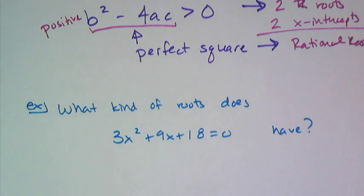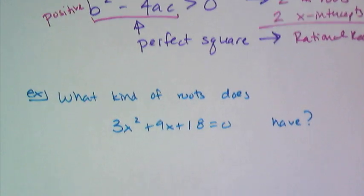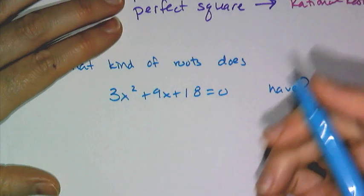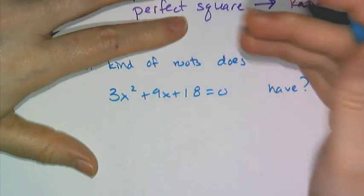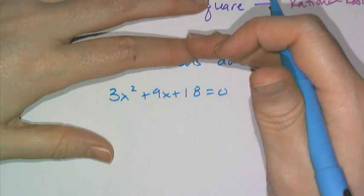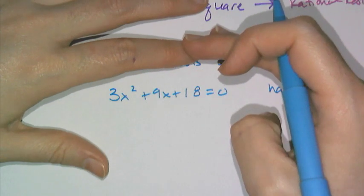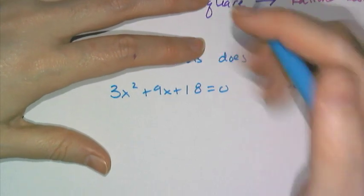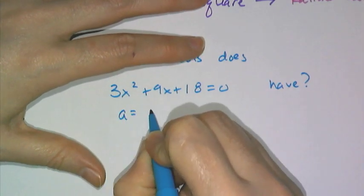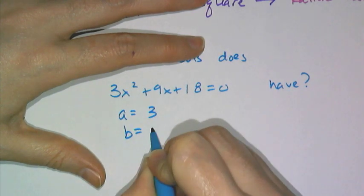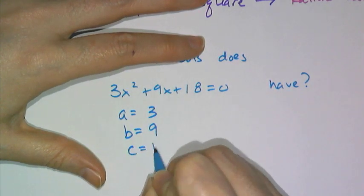What kind of roots does 3x squared plus 9x plus 18 equals 0 have? So first things first, I have to check to make sure that this is in simplified standard form and equal to 0. So yes indeed it is, it is in the correct format and equal to 0. So now I know my a value is 3, my b value is 9, and my c value is 18.